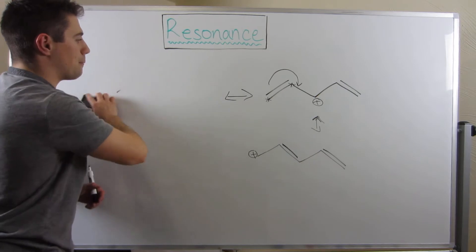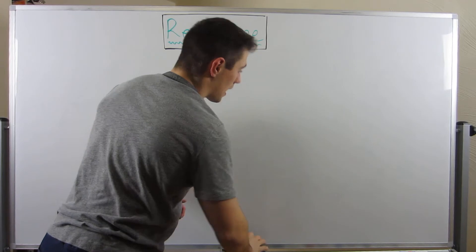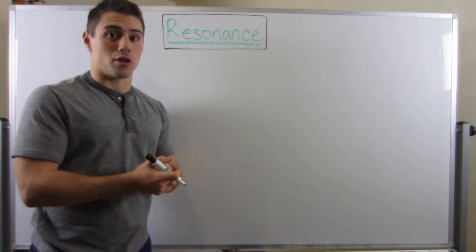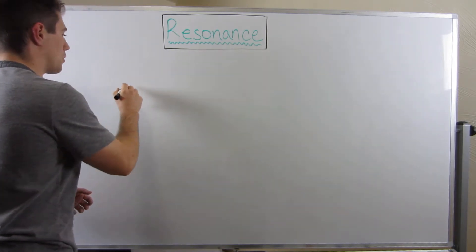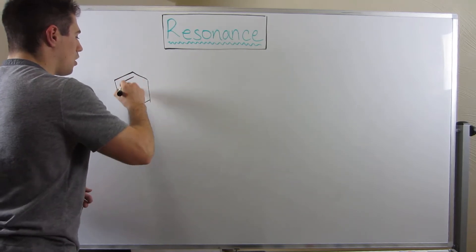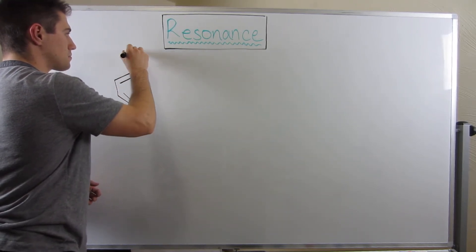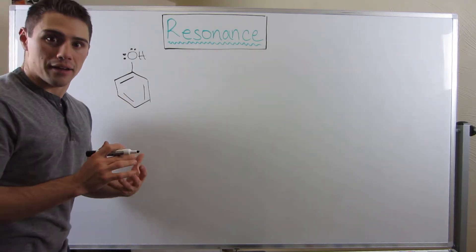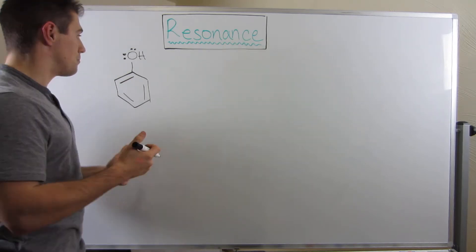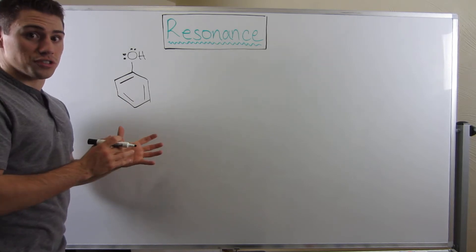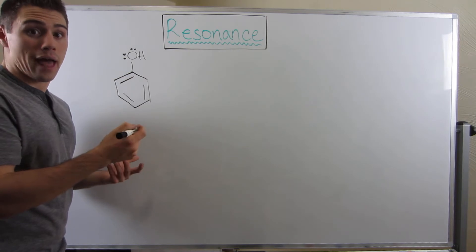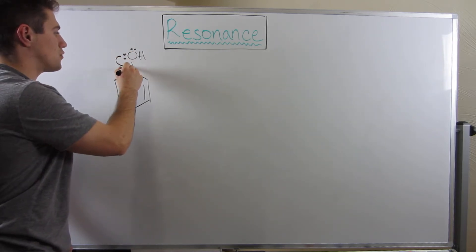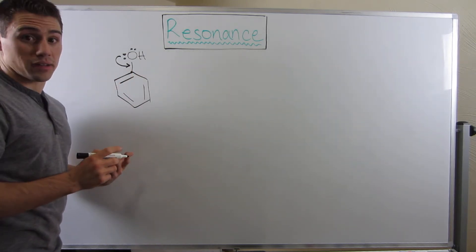We'll do one more example and then wrap up resonance. I really encourage you to re-watch these videos and practice — hit the worksheet hard on formal charges and resonance because they're so important. We're going to look at phenol. This is kind of as hardcore as resonance gets. We don't see any positive or negative charges here initially. Another exception: you can move electrons toward neutral atoms. So let's take these electrons on oxygen and move them into the ring — swing them down to form a double bond.